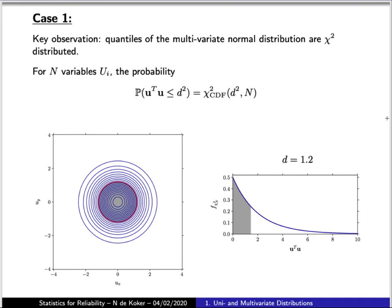Now the key observation that allows us to evaluate the first case is that the quantiles of a multivariate normal distribution are chi-square distributed. So what this says is that if you have an n-dimensional problem, the probability of a point falling within an n-dimensional hypersphere of radius d is given by the chi-square distribution with n degrees of freedom evaluated for a chi-square variable with a value of d-squared.